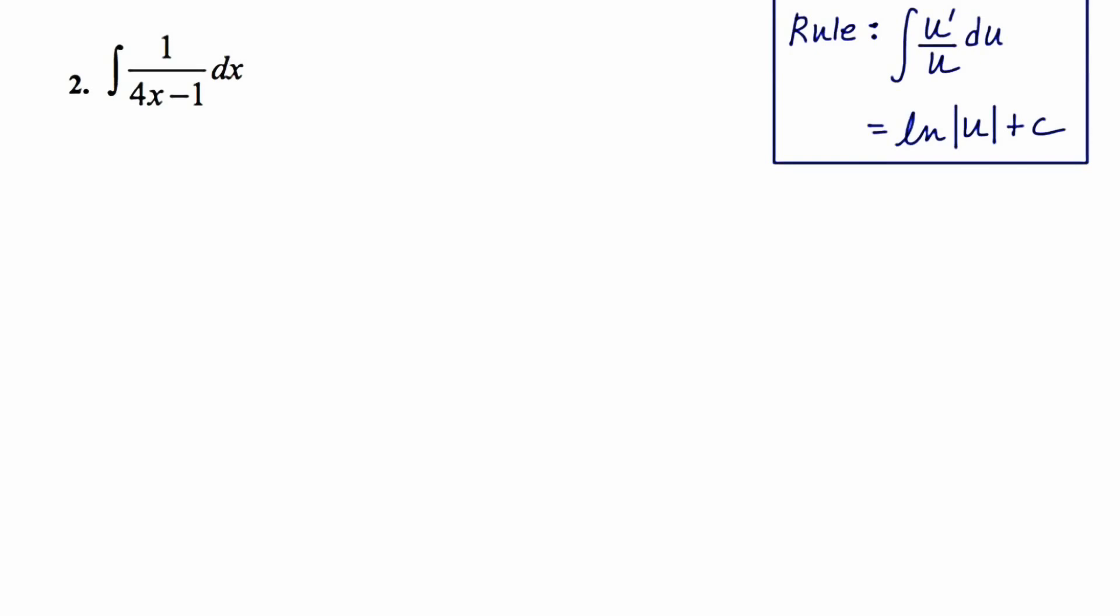If we're integrating an expression u prime over u, that is, we have some denominator u, and its derivative is in the numerator, then when we find the antiderivative, we get the natural log of the absolute value of u plus c. Let's see how that applies to question number 2, where we're asked to integrate 1 over 4x minus 1.